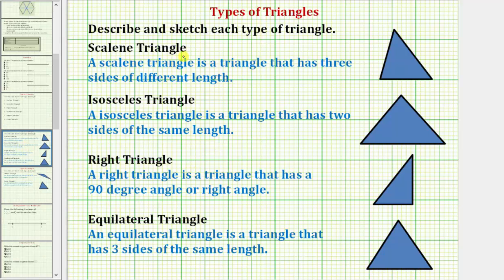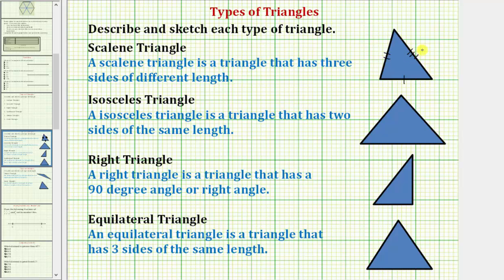A scalene triangle is a triangle that has three sides of different length. Here's a picture of a scalene triangle — each side has a different length. We often use tick marks to communicate whether sides have the same or different lengths. Because all three sides have a different length, we use one tick mark on the first side, two tick marks on the second, and three tick marks on the third. Because each side has a different number of tick marks, we know they have different lengths.